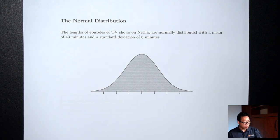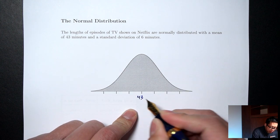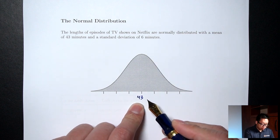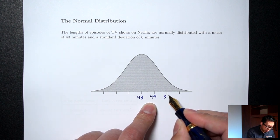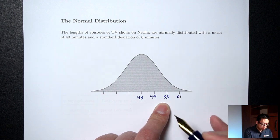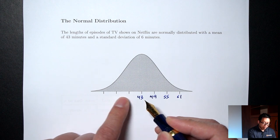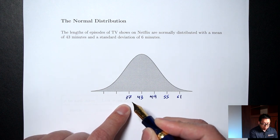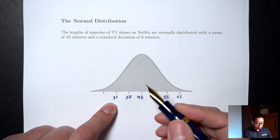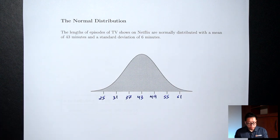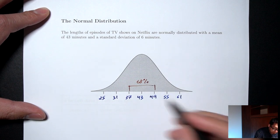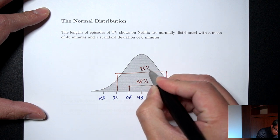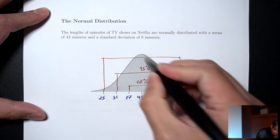To use the empirical rule, we put the mean in the middle — the mean here is 43. Then we use the standard deviation to go up 3 times and down 3 times. Starting with the mean: 43 plus 6 is 49, plus 6 again is 55, plus 6 one last time is 61. Going the other direction: 43 minus 6 is 37, minus 6 again is 31, minus 6 one last time is 25. The empirical rule says between one standard deviation up and down is 68% of the data, between two up and two down is 95%, and between three up and three down is 99.7%.